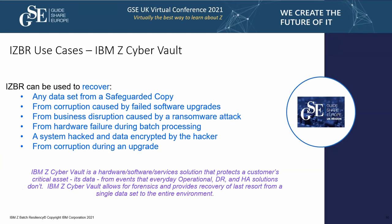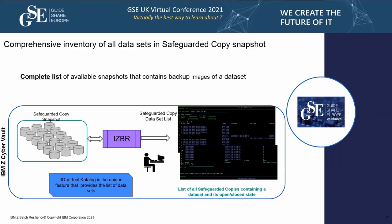Use cases for the CyberVault include recovering any dataset from a safeguarded copy — VSAM or non-VSAM — generally non-database-managed data. It could also be used for a software upgrade failure or any disruption caused by a ransomware attack or other outage. The 3D virtual catalog is the basis — a patent-pending solution within IZBR — showing lists of datasets, how they were used, whether they were open, their history, and where they resided. From there we can look at individual records and allow recovery of those datasets individually or as a group.